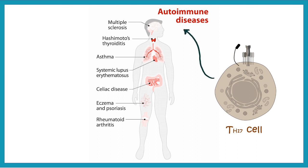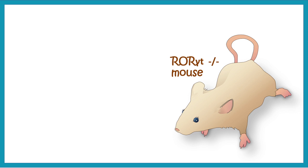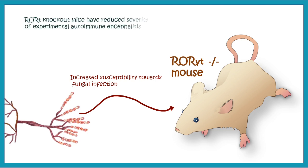TH17 sub-population turns out to be involved in several autoimmune diseases. In ROR gamma T knockout mice, in which the differentiation of TH17 does not happen, those mouse lines show increased susceptibility towards fungal infection — which makes sense because TH17 cells are actually involved in antifungal responses. However, these same knockout mice show less severity of experimental autoimmune encephalitis, meaning TH17 cells are normally involved in autoimmune responses, and removing them reduces that severity.